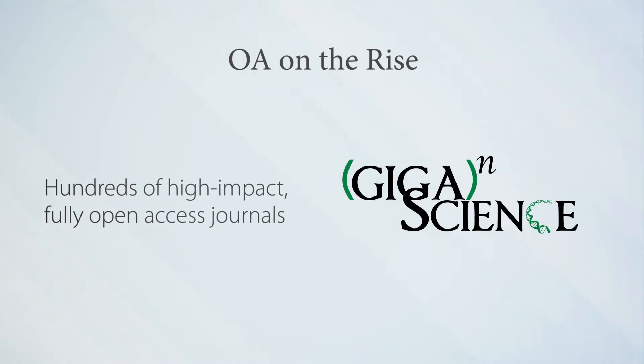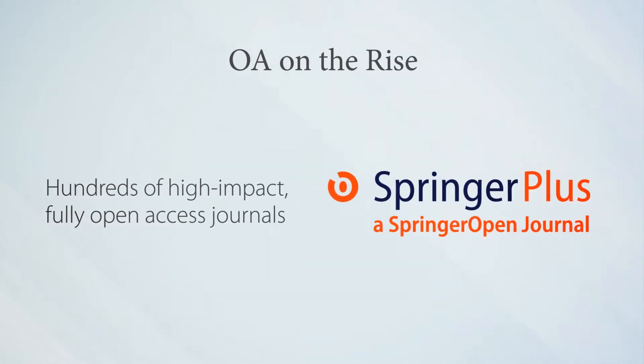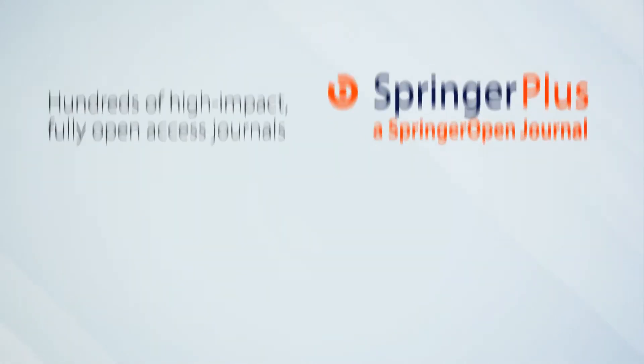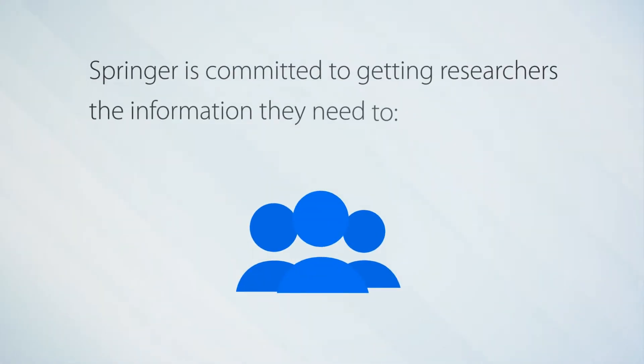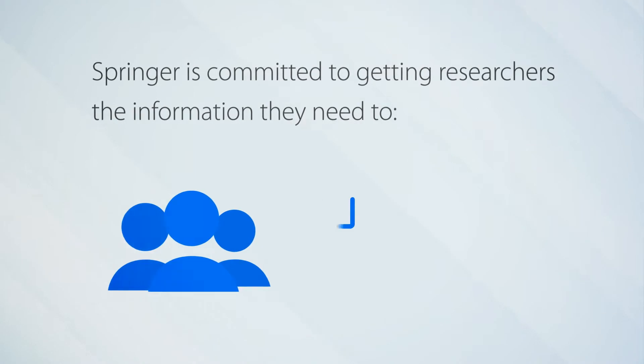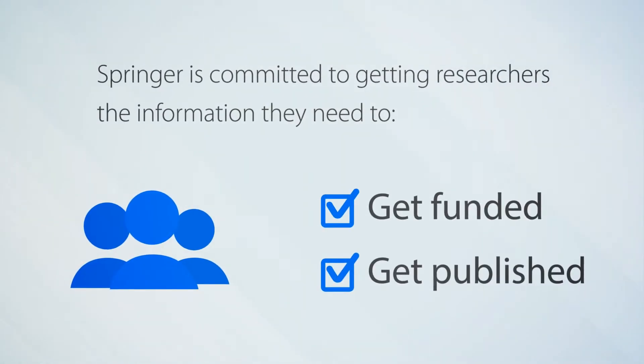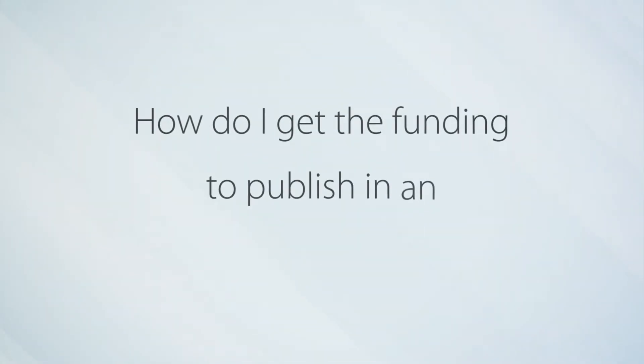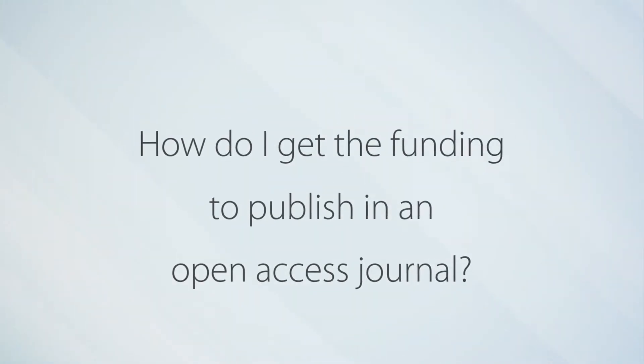Springer has been a pioneer in open access publishing. We are committed to getting researchers the information they need to get funded and get published. One of the most common questions researchers have about open access is: how do I get the funding to publish in an open access journal?